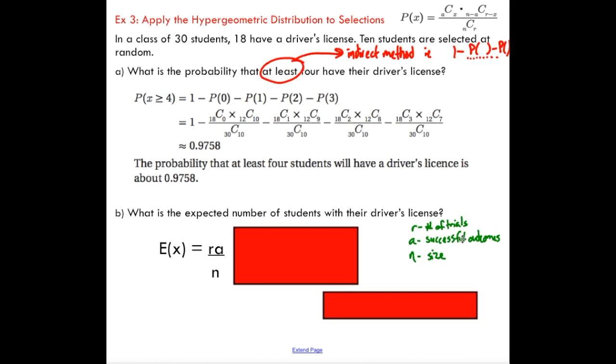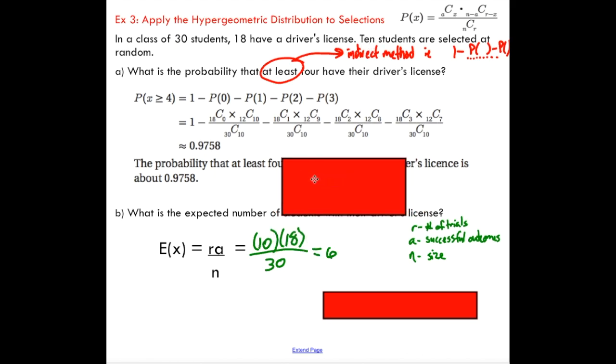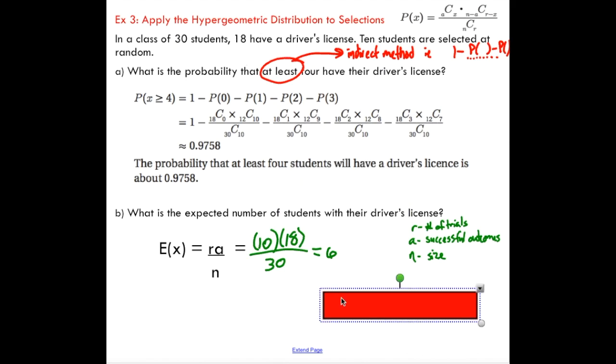Remember, r is the number of trials, a is successful outcomes, n is the size. In this case, there's 30 students in total. We're looking at 10 trials—we're selecting 10 students at random. Our a value is our successful outcomes, so that's 18. We've got 18 students with a driver's license, so that leaves an expected value of six. You can expect six people to have their driver's license.